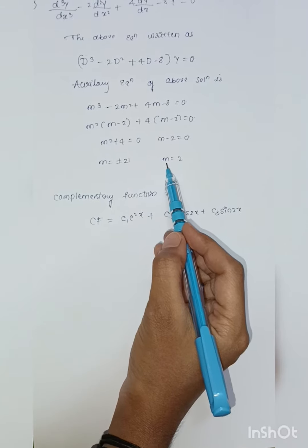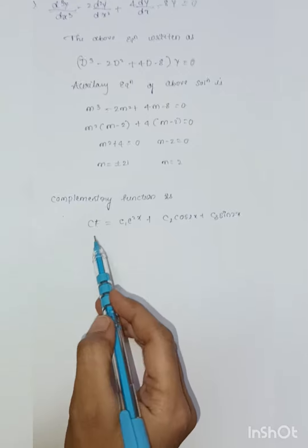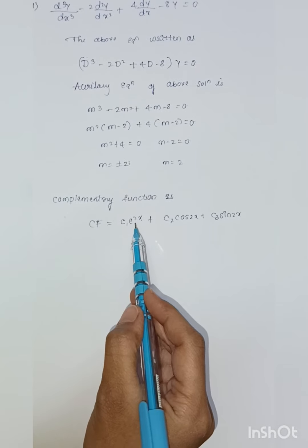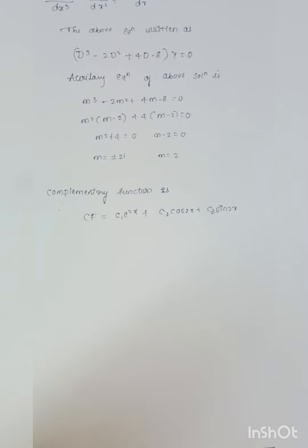Another root is m is equal to 2. The complementary function is CF = c1 e to the power 2x plus c2 cos 2x plus c3 sin 2x. Thank you.